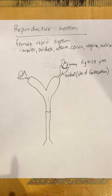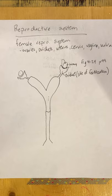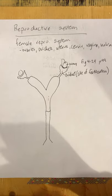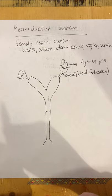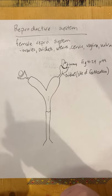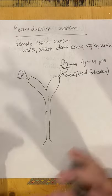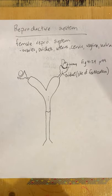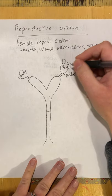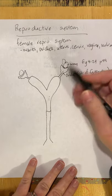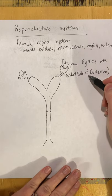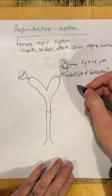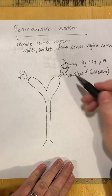Fertilization refers to the sperm and egg meeting up. The sperm breaks through the outer shell of the ovum, fertilization happens, and we see the beginning of a little puppy or kitten. Once fertilization occurs, we call that the embryo.